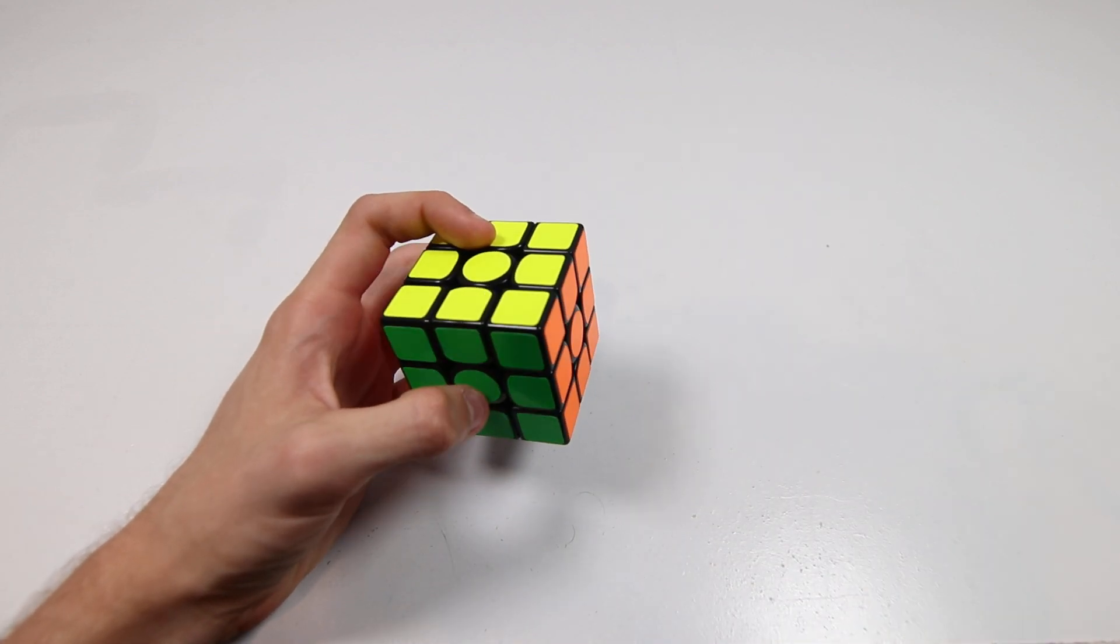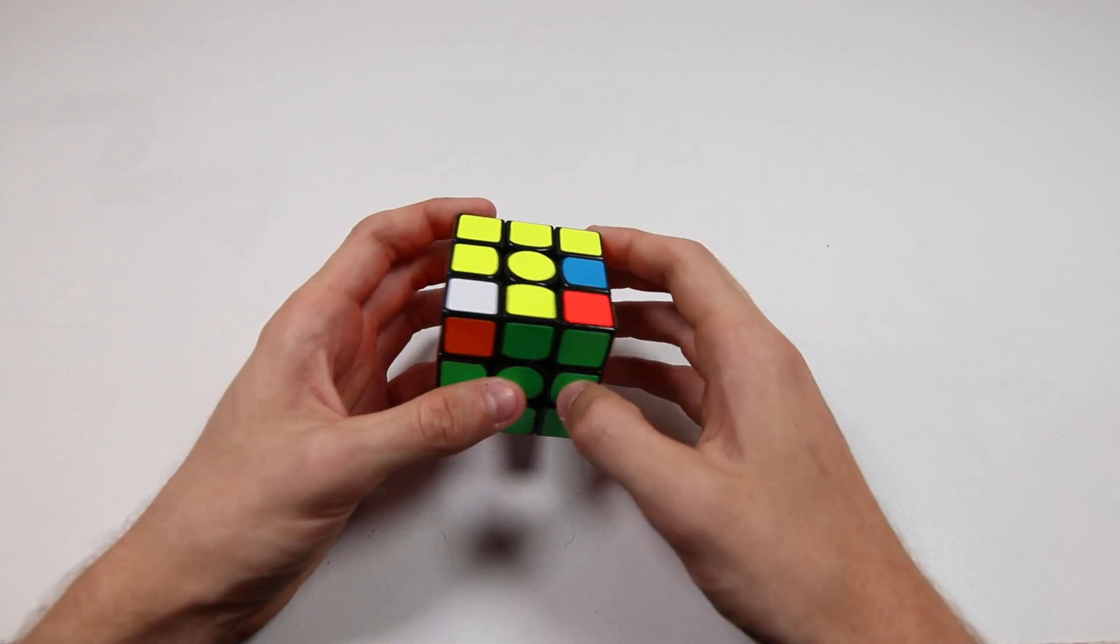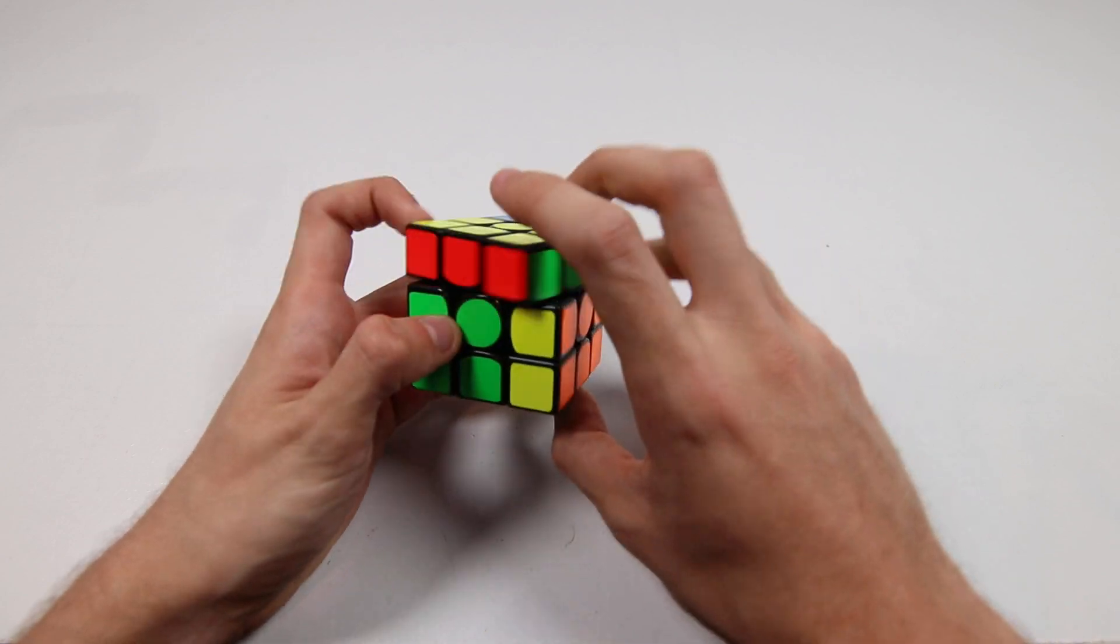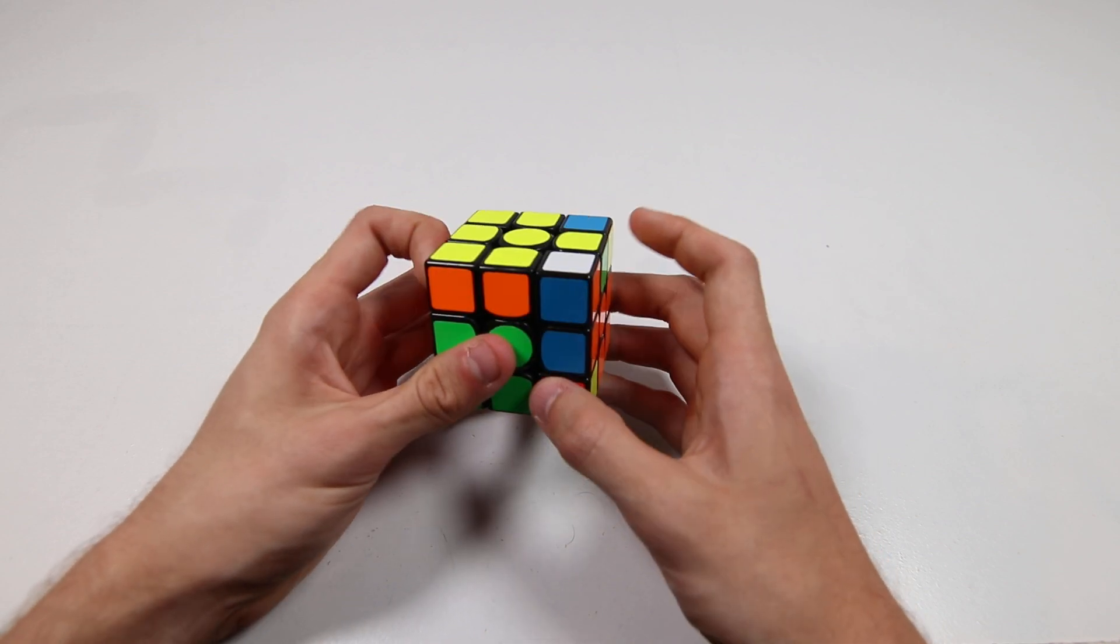Now I'm struggling to think of an example that involves starting with a U prime. Actually this works. Okay, so this pair. Now doing this in home grip, you can do it, but having to push that last U turn just kind of sucks, or like dragging it like that.